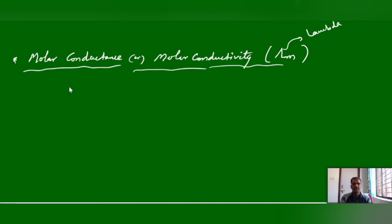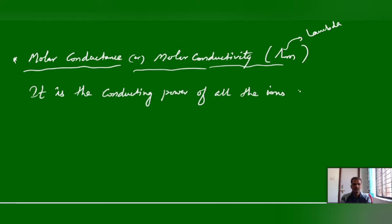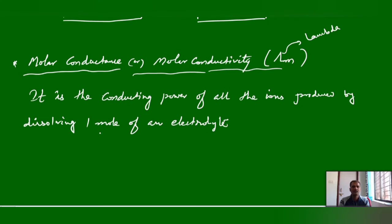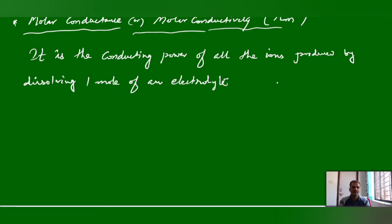The conductance produced by 1 mol of ions is called Molar Conductance. It is the conducting power of all the ions produced by dissolving 1 mol of electrolyte. The conductance produced by this 1 mol electrolyte is called Molar Conductance.